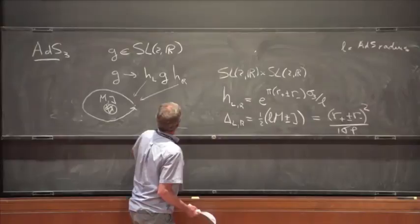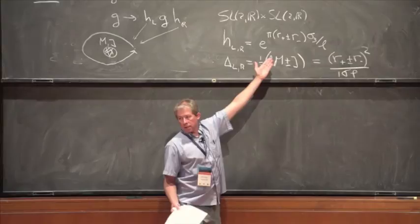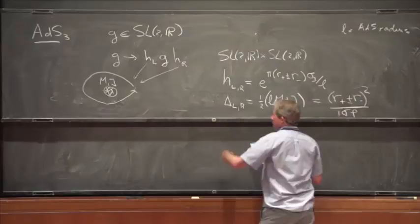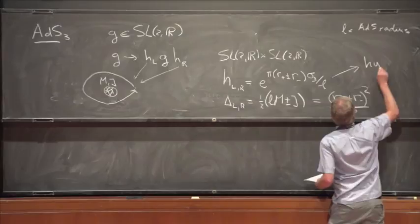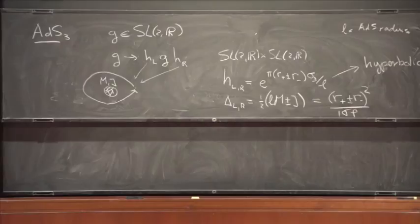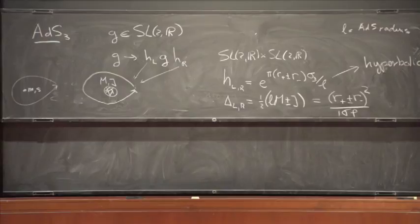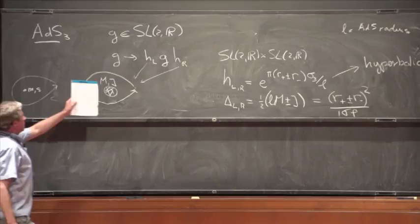If I have a heavy object somewhere, and I go around it, I come back not to the same SL(2,R) group element but multiplied by some diagonal matrix. If this is a black hole, this element is what you call a hyperbolic conjugacy class of SL(2,R). SL(2,R) looks like the Lorentz group in 2+1 dimensions, and hyperbolic elements are like boosts. For a small particle with mass M and spin S, you still go around it, and it has a little conical deficit — the H_L and H_R are elements of an elliptic conjugacy class.